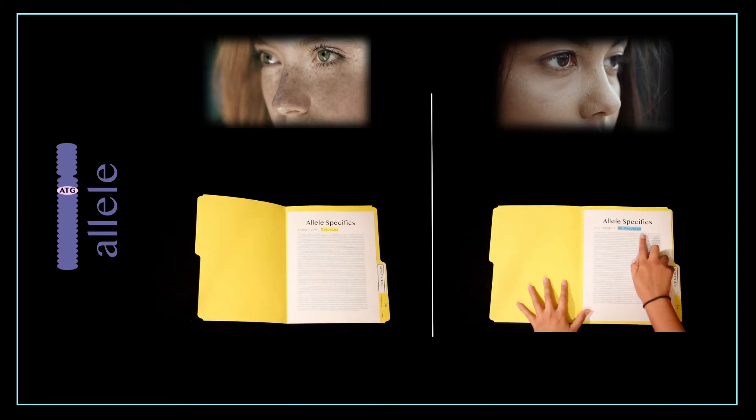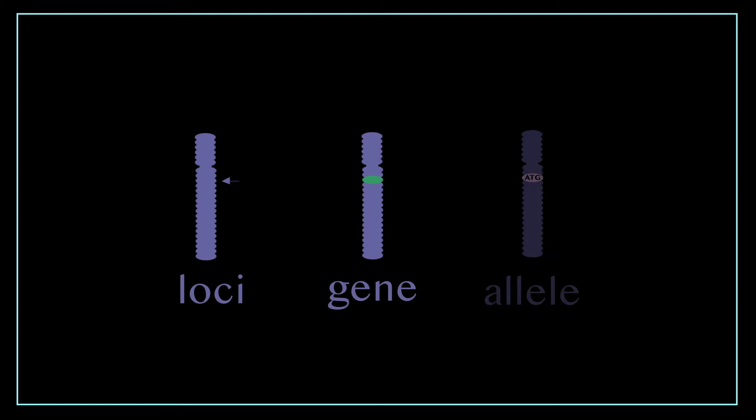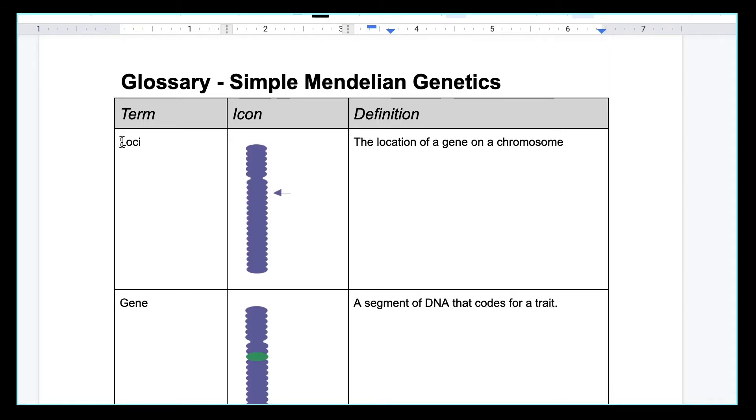Hopefully that makes sense. I feel like this is the most confusing part to people first learning about genetics. Knowing the terminology is so important because it's usually the wording that will get you tripped up on tests. If you check the link in the description of this video I've created a glossary for this lesson and so if you want to you can print it out and study with it.